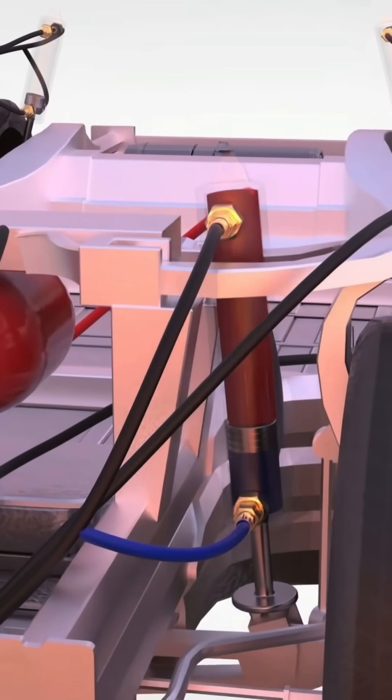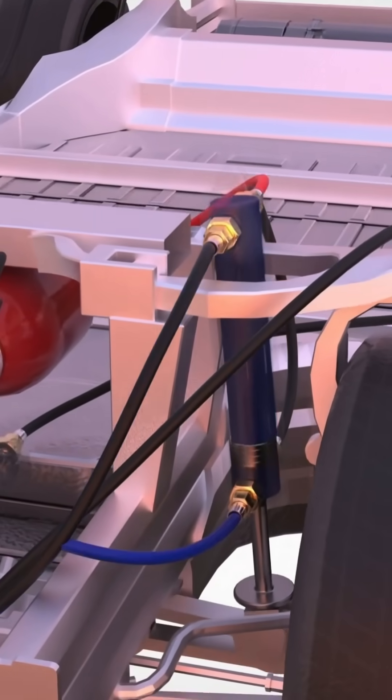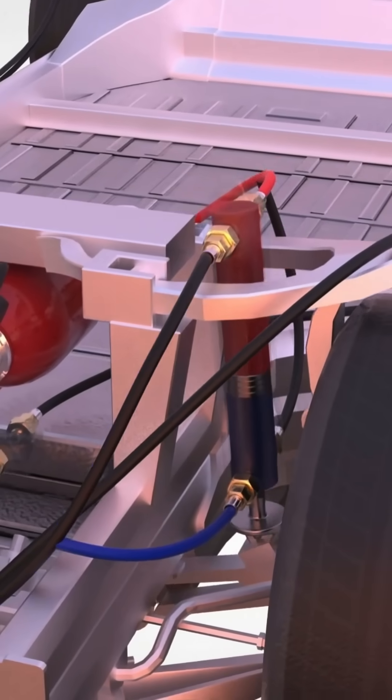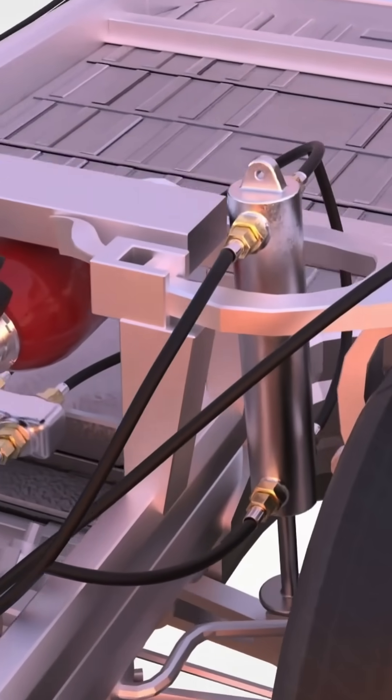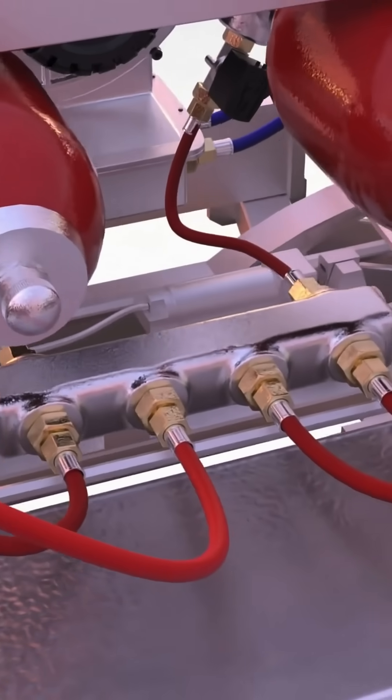As a vehicle moves, gravity system captures energy from the suspension's motion. Each time the suspension compresses, hydraulic fluid flows through high-pressure hoses to a central manifold, building up pressure, just like water in a dam.